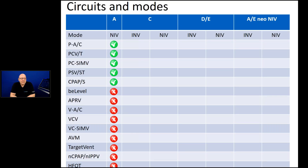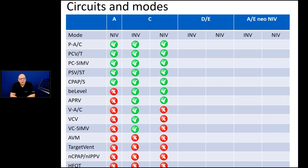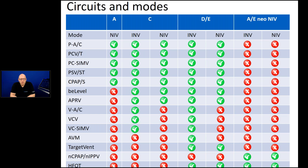Most of you are using D and E circuits with the flow sensor, and I think this is also the best way — you have the best sensor performance, the best triggering, and the most precise volume control. In this overview you can see when to use each circuit, for what kind of modes, and for invasive versus non-invasive ventilation. This can sometimes be helpful to know which modes you can use with which circuits.